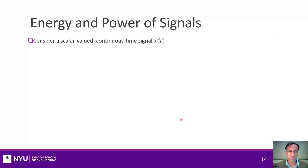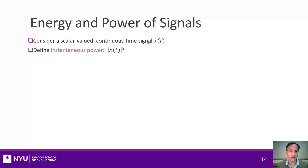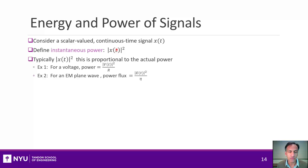Let's talk about energy and power. Consider any scalar-valued continuous signal, x(t). In signals and systems, we always think about the magnitude squared of that signal as representing its instantaneous power. The reason we consider that is because for many signals of interest, the magnitude squared will be proportional to the actual power.